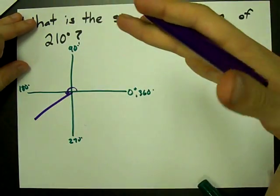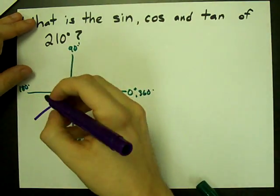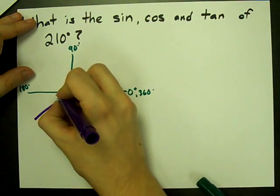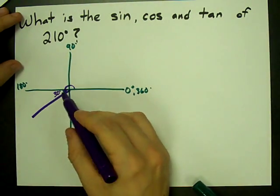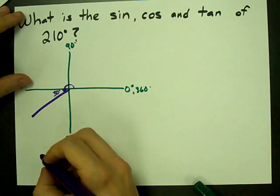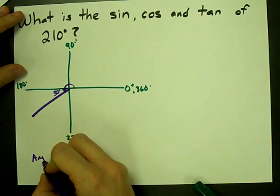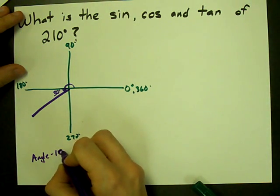How much more than 180 is it? It's actually just 30 degrees more. You can always get that number. If you're in this third quadrant, you can always get it from your angle minus 180 degrees.